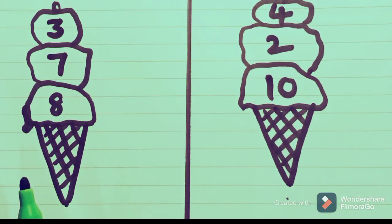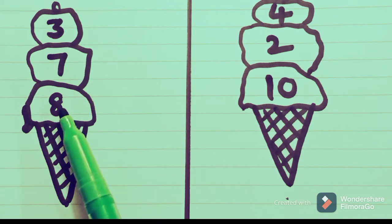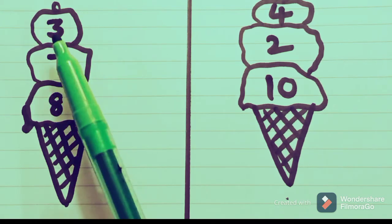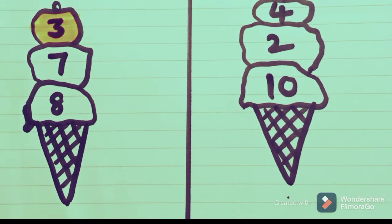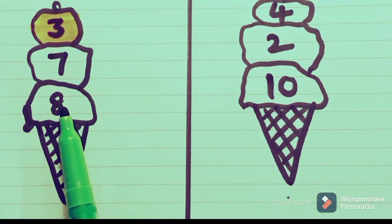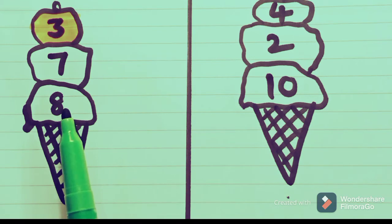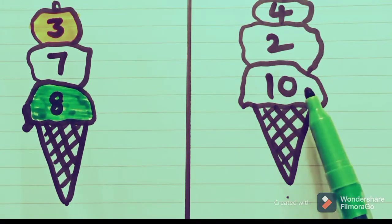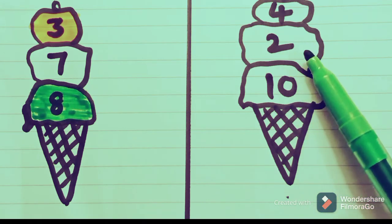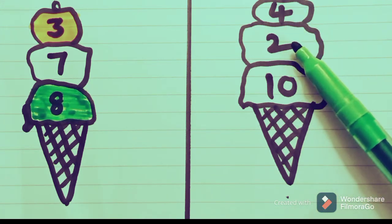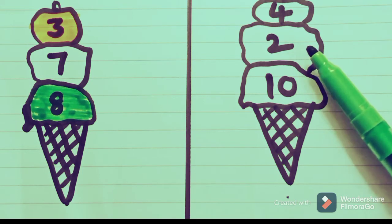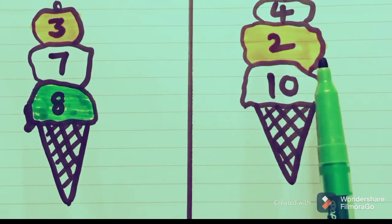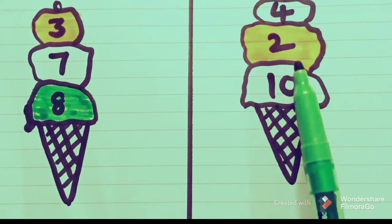Now let us see the next ice cream — three scoops with numbers 3, 7, and 8. 3 is the smallest number, so color it in orange. The greatest number: after 3, 7 comes; after 7, 8 comes. So 8 is the biggest number — color it in green. In the next ice cream, the three scoops have numbers 2, 4, and 10. The smallest is 2 — color it in orange. After 4, 10 comes, so 10 is the biggest number — color it in green.